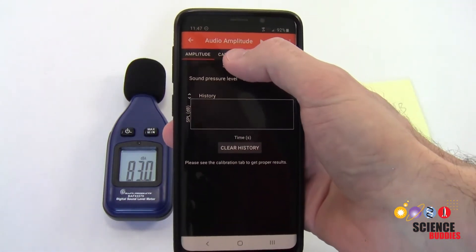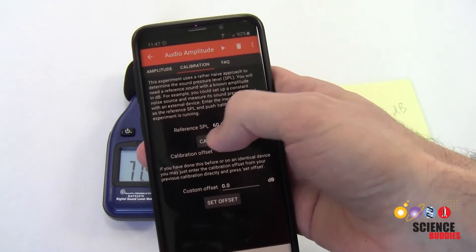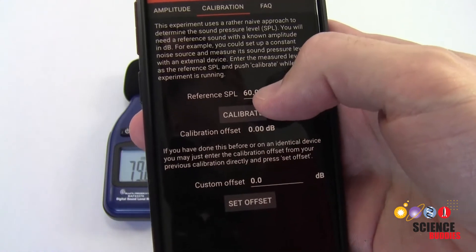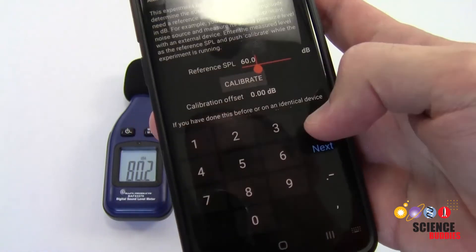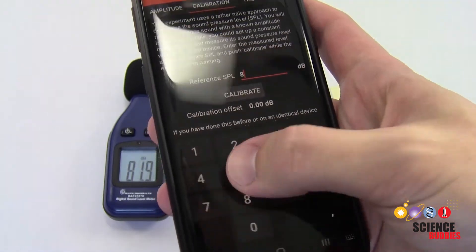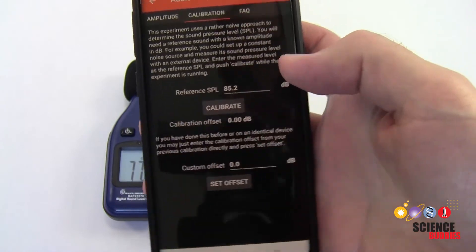Next, in Firefox, I'm going to go over here to the calibration tab. I'm going to enter that value that I just recorded in the field here for reference SPL. SPL stands for sound pressure level. I'm going to click on that field, enter 85.2, and then exit out of the typing.